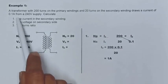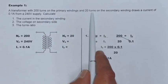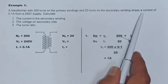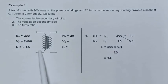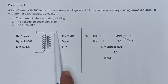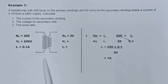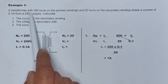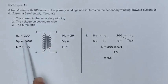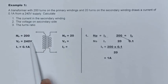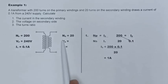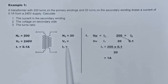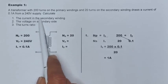In the example, a transformer with 200 turns on the primary winding and 20 turns on the secondary winding draws a current of 0.1 amps from a 240-volt supply. The first thing to do is draw the symbol of a transformer — this helps with the calculation. Then plot all given values in their correct positions: 200 turns, 240 volts, and 0.1 amps on the primary; 20 turns on the secondary with voltage and current unknown. The first question asks us to calculate the current in the secondary winding.